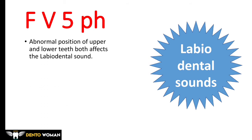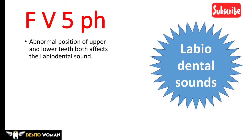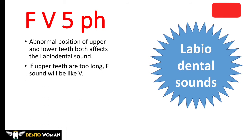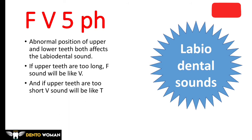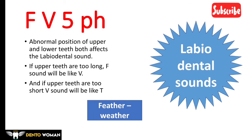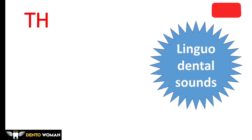F and V are labiodental sounds. When the upper incisor and the posterior one-third of the lower lip meet together to produce these sounds. Abnormal position of upper and lower teeth both affects the labiodental sound. If upper teeth are too long, F will sound like V, and if upper teeth are too short, V sounds like F. So if upper teeth are too long, a person intending to say 'feather' will sound like 'weather.'